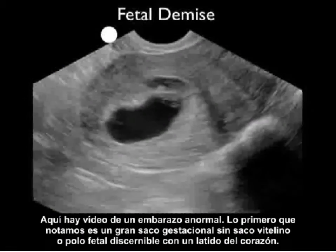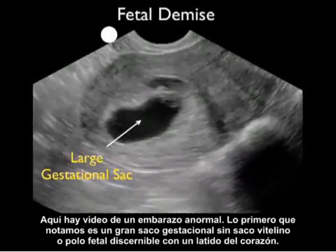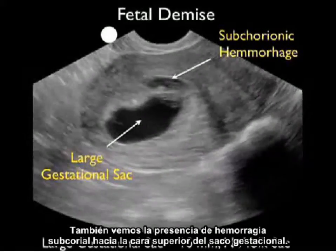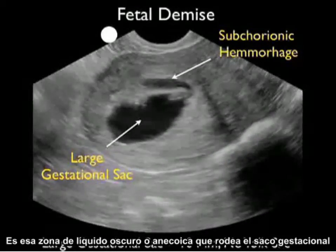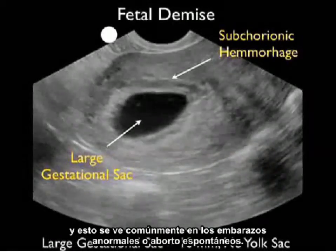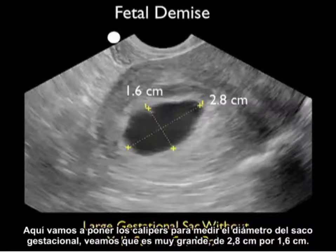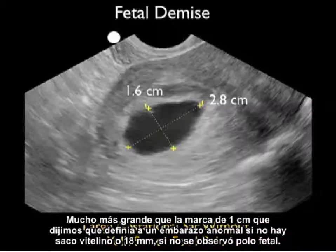Here's video from an abnormal pregnancy. The first thing we notice is a very large gestational sac without a yolk sac or discernible fetal pole with heartbeat. We also see the presence of subchorionic hemorrhage to the superior aspect of the gestational sac — that area of dark or anechoic fluid surrounding the gestational sac — commonly seen with abnormal pregnancies or spontaneous miscarriage. Placing calipers to measure the diameter, the sac is very large at 2.8 centimeters by 1.6 centimeters, much larger than the 1 centimeter mark defining an abnormal pregnancy without a yolk sac, or 18 millimeters without a fetal pole.